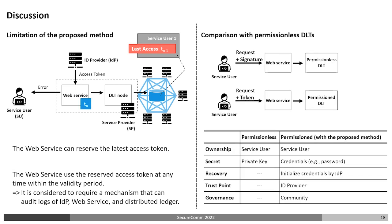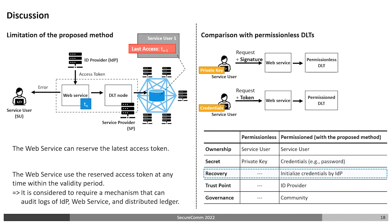Next, I will explain the comparison with permissionless DLTs. In both systems, the service user has ownership of the data. However, one of the major differences is the secret information managed by the service user. To call the smart contract, permissionless DLT requires digital signatures made with private keys, whereas the proposed method requires tokens obtained with credentials such as passwords. Unlike permissionless DLT, the proposed method may be recoverable through credential initialization by the ID provider. However, this requires the ID provider to be a trust point, which is a drawback when compared to permissionless DLTs.